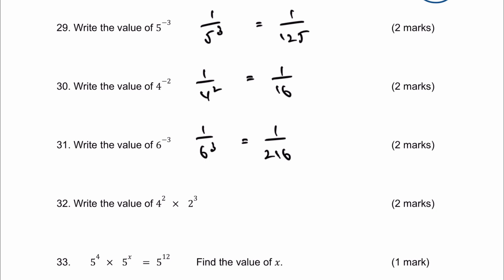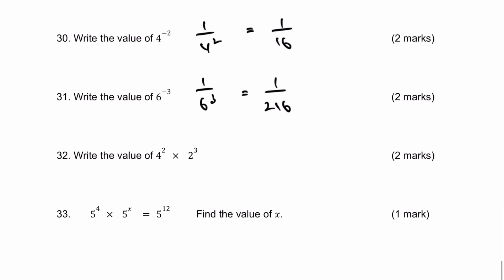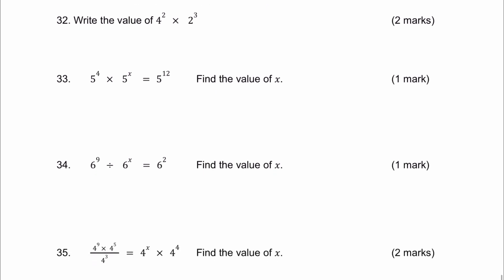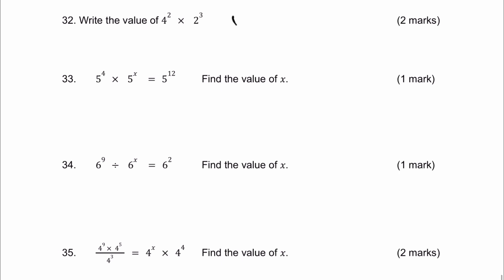These are typically non-calculator questions, so be very careful — you should not be using a calculator with any of these. Number 32: 4 squared times 2 cubed. 4 squared is 16, and 2 cubed is 2 times 2 times 2 which is 8. 16 times 8 gives a value of 128, and that'll be 2 marks for you.